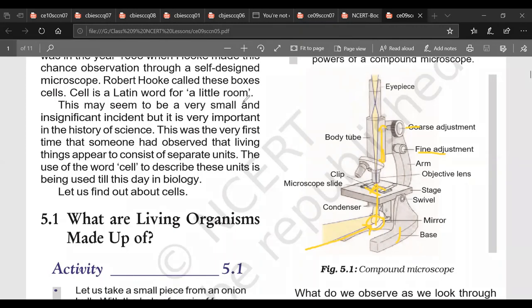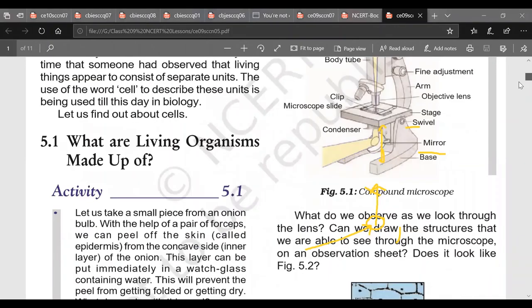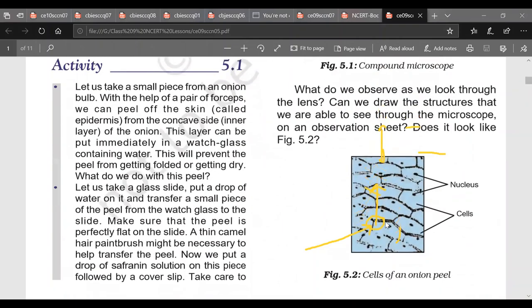When we observe our onion peel under this microscope we shall be able to see structures like this. But the difference is that this diagram is given in sky blue color. And we shall be able to see in pink color when we are using safranin stain. What we will be observing under compound microscope when we are making our slide and observing it. We shall be able to see cell walls.